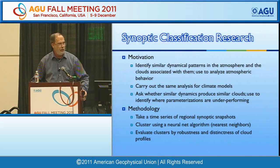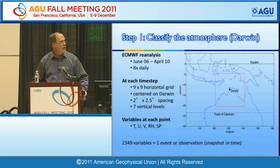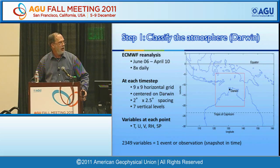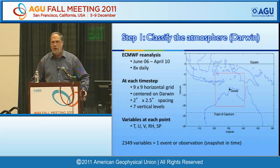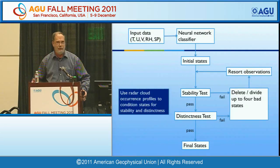Our methodology is to take a time series of regional synoptic snapshots, cluster them using a neural net algorithm — all of which is pretty simple. The next step is to figure out whether you have a robust set of clusters and how you would know. To give an example, I'm going to use Darwin, Australia. We collect every three hours data on a nine-by-nine horizontal grid with two-by-two-and-a-half-degree spacing of temperature, horizontal velocities, relative humidity, and surface pressure — about 2,300 to 2,400 variables per snapshot. We do this for four years, eight times a day, and throw it into a computer to cluster.